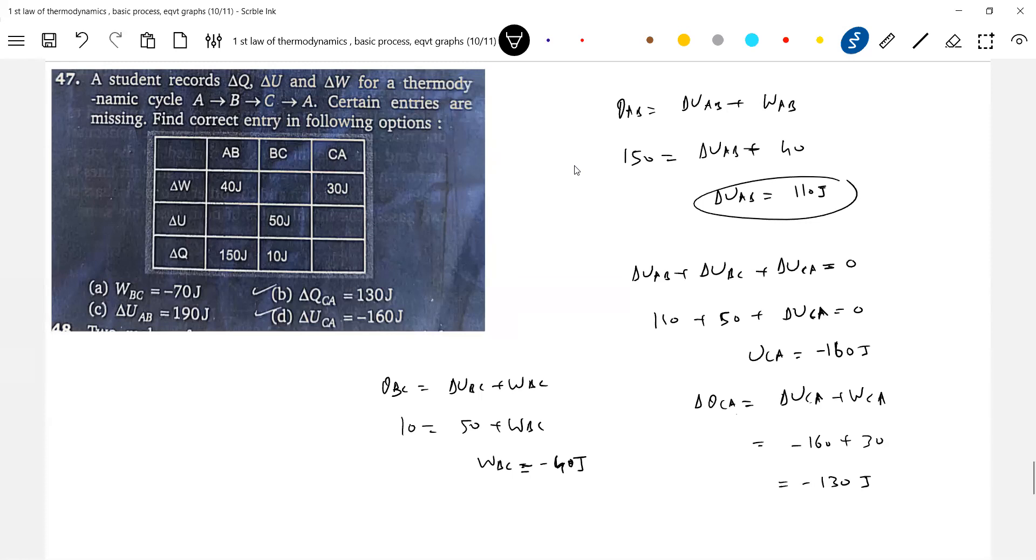Okay, sometimes they don't give any graph, so just manage everywhere. This is the core idea: for a cyclic process, change in internal energy must be zero.